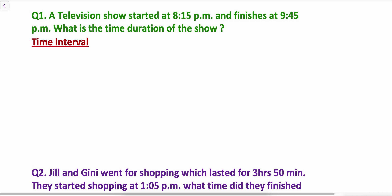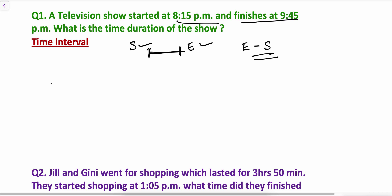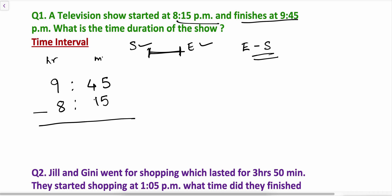Question 1: A TV show started at 8:15 PM and finished at 9:45 PM. What is the time duration of the show? Start time and end time are both given, so we do end time minus start time: 9 hours 45 minutes minus 8 hours 15 minutes. Starting from the right: 45 minus 15 is 30, and 9 minus 8 is 1. So the duration of the show was 1 hour 30 minutes.